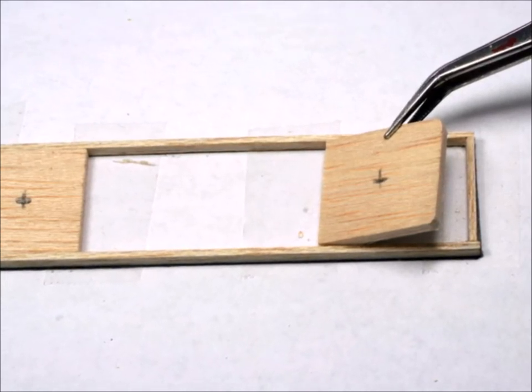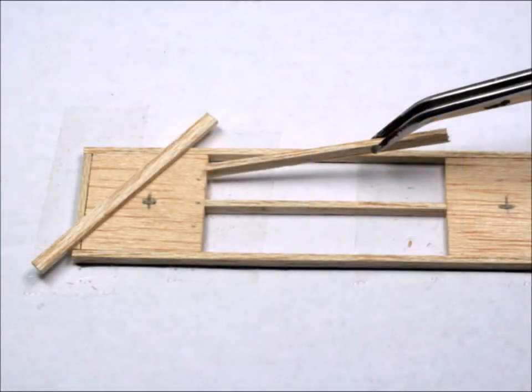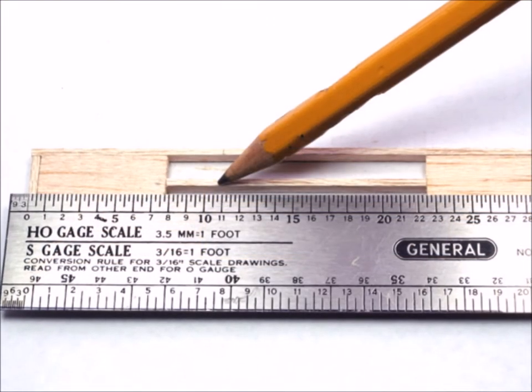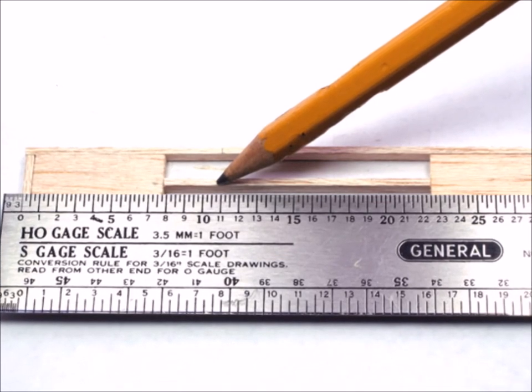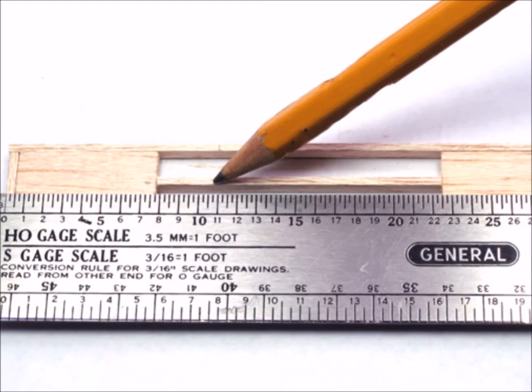From that point I started putting in some lateral stringers which will give it stability and strength. At this point in the project, make sure that everything is straight and plumb because as you add more stuff it'll be too late. You won't be able to change anything and you do want it flat and straight.